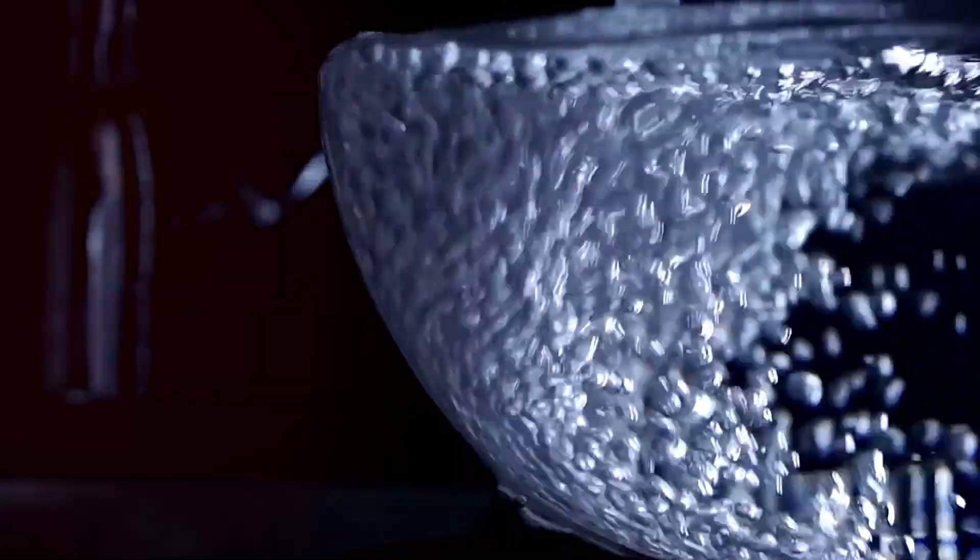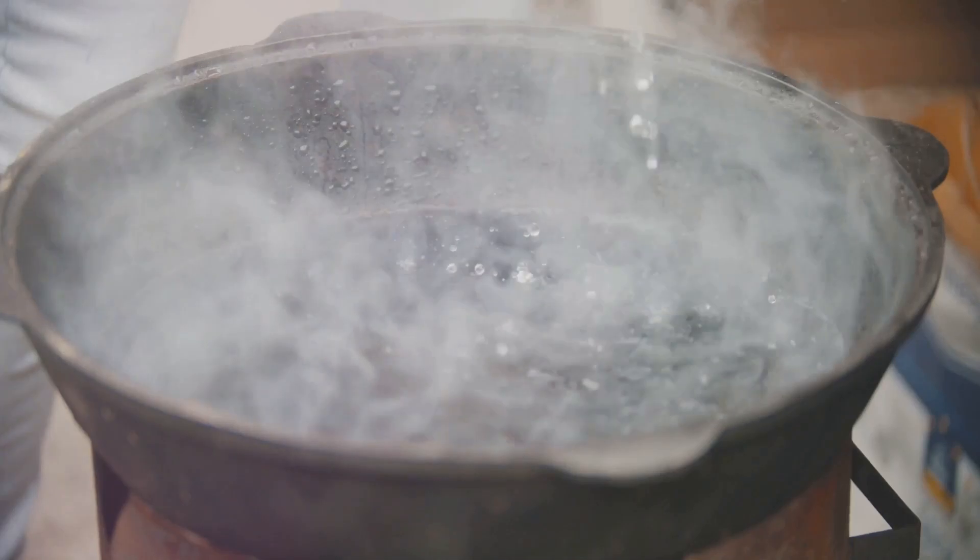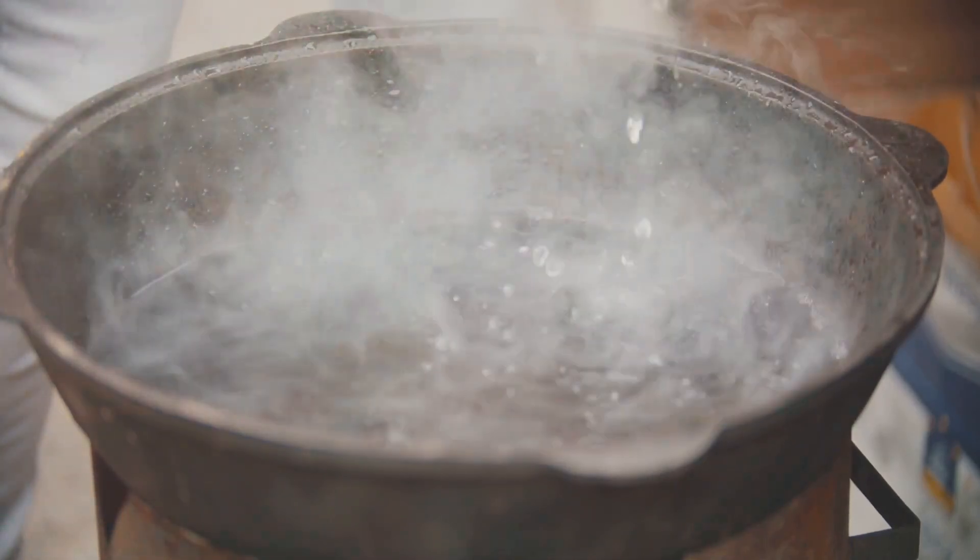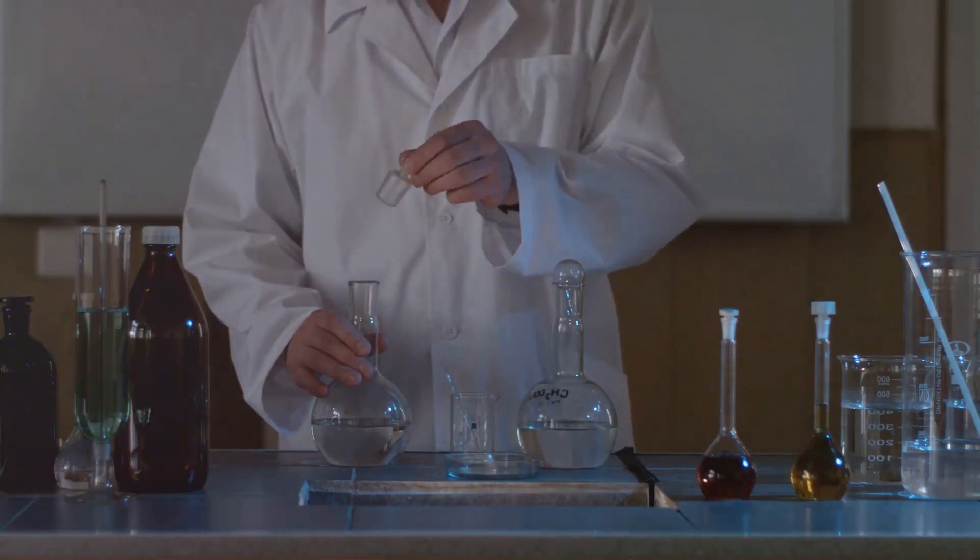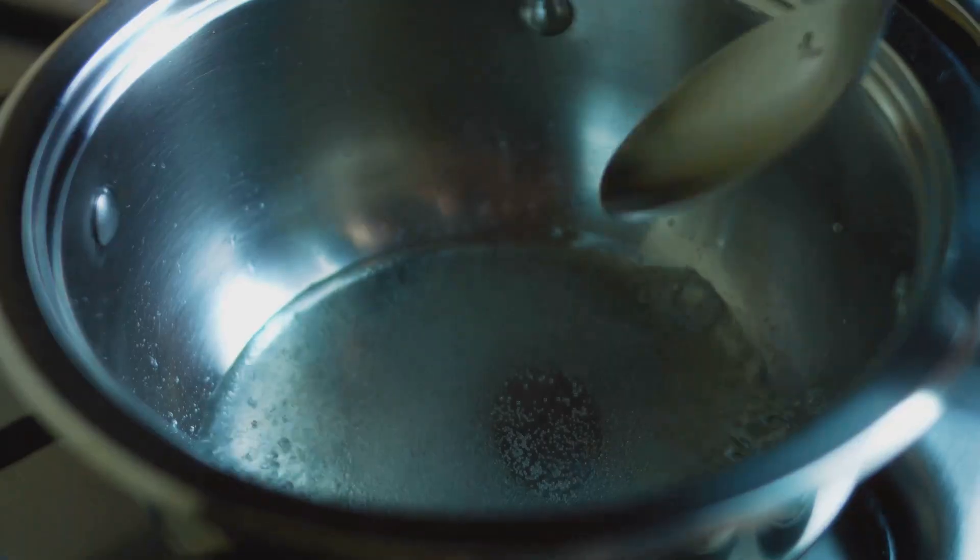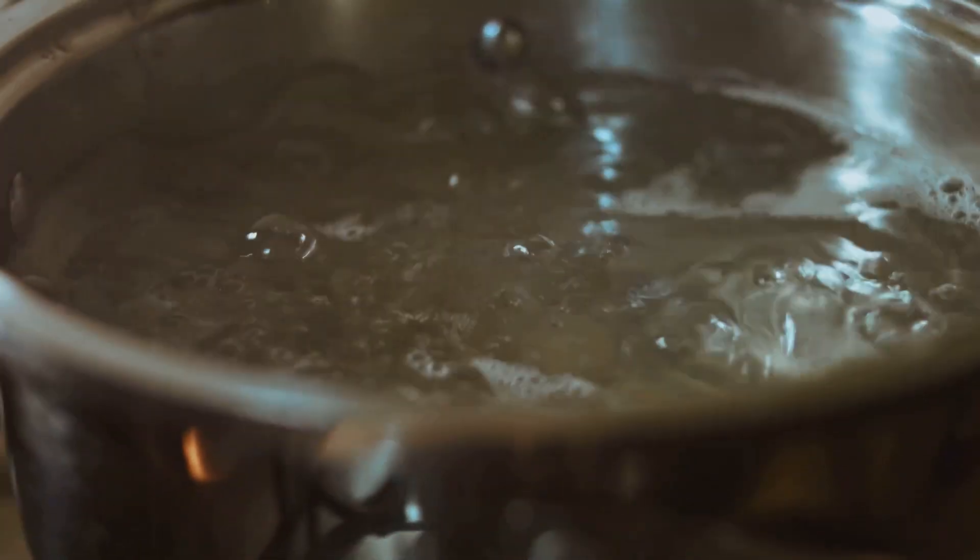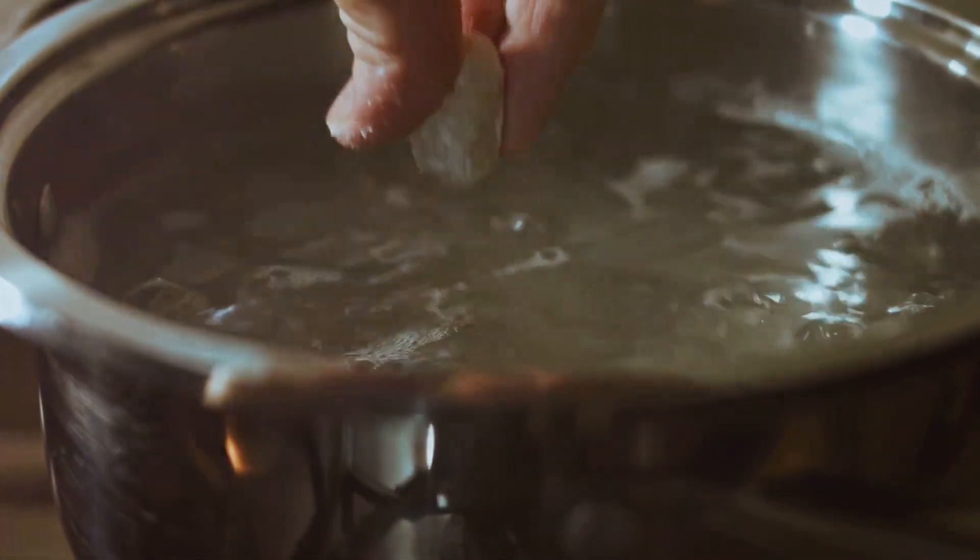How do we get from regular tap water to pure distilled water? The answer is simple. Boiling, condensing, and collecting. It's like a science experiment in your kitchen. First, we heat the water. When water boils, it turns into steam. The steam rises and leaves behind all the impurities. This steam is pure water vapor.